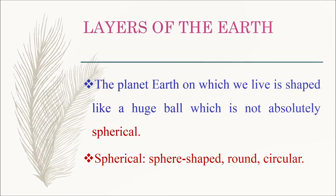First we are going to learn about layers of the earth. The planet earth on which we live is shaped like a huge ball which is not absolutely spherical. Here spherical means sphere-shaped, round or circular.